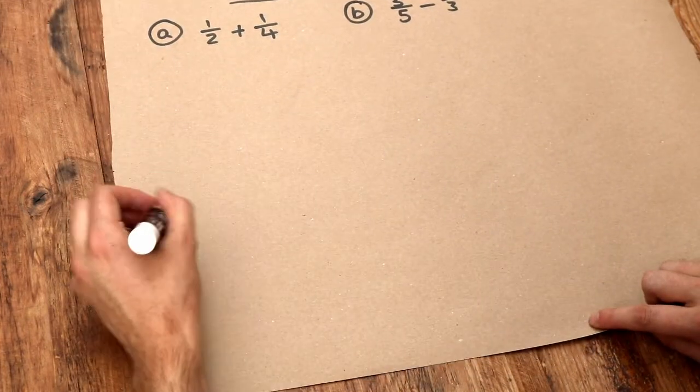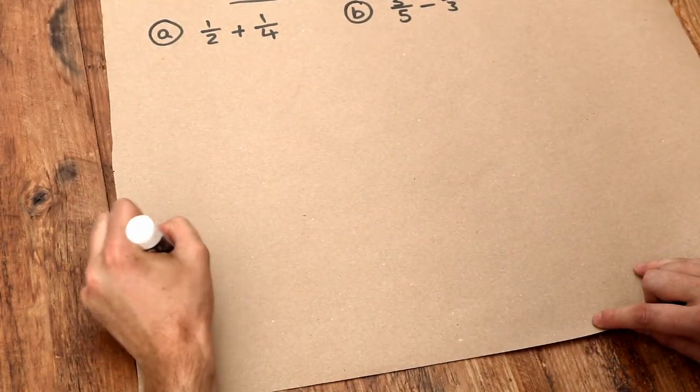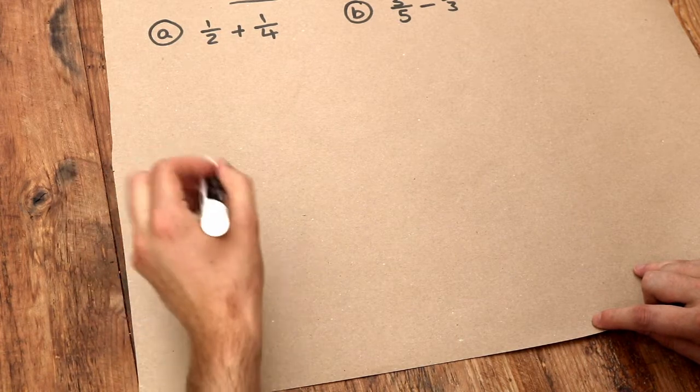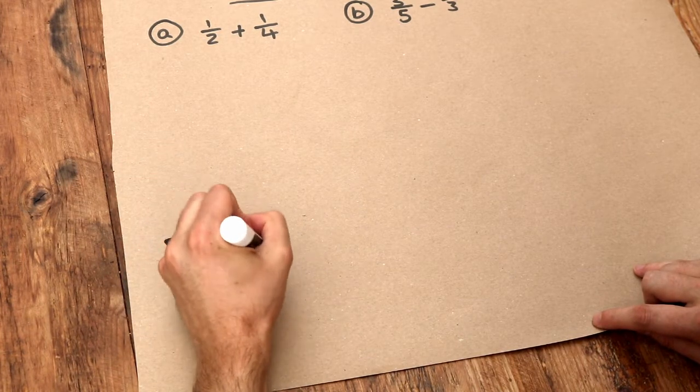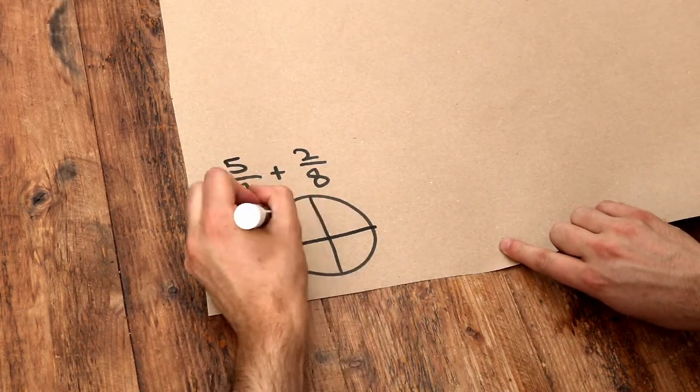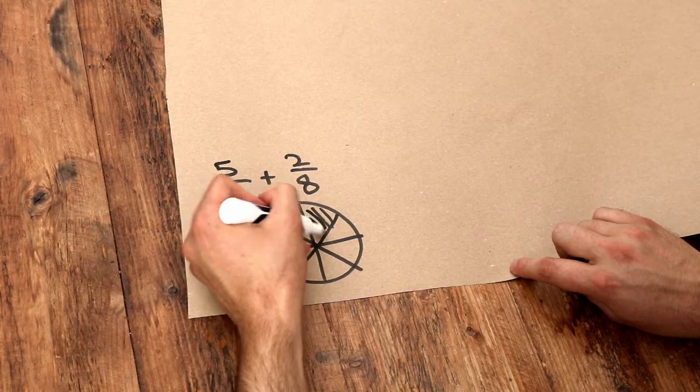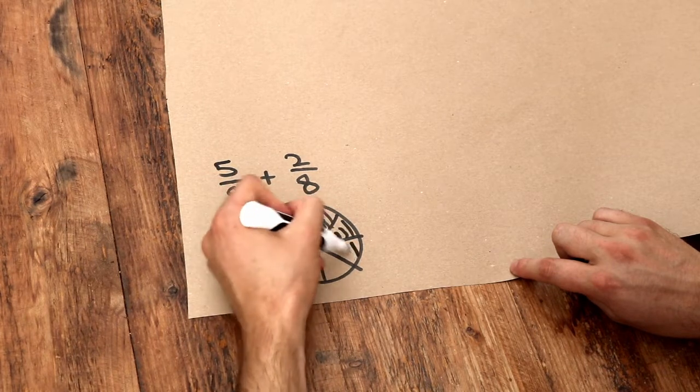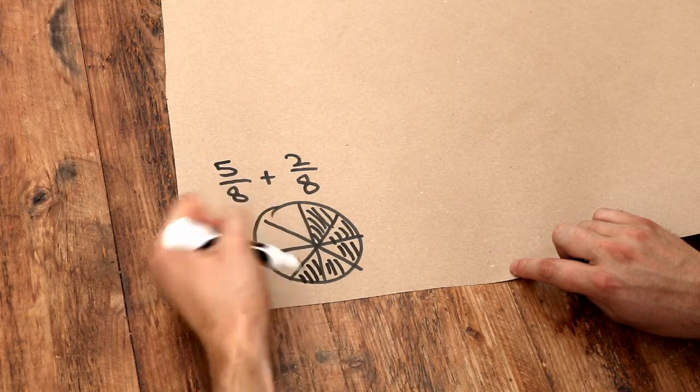So for example if we had five eighths of something and then we added on two eighths of something we could represent that visually. If we had say a pizza and we divided it into eighths, then if we have five of those eighths, one two three four five eighths.